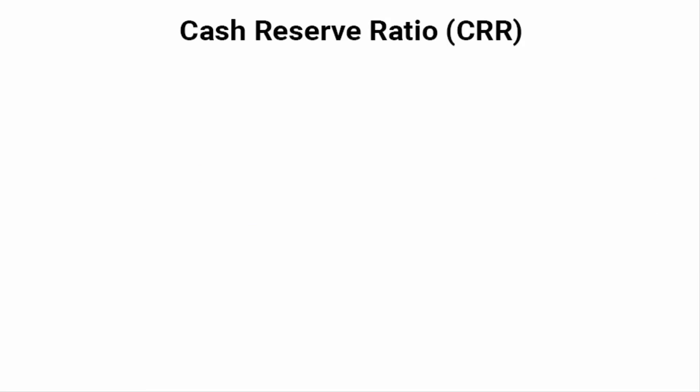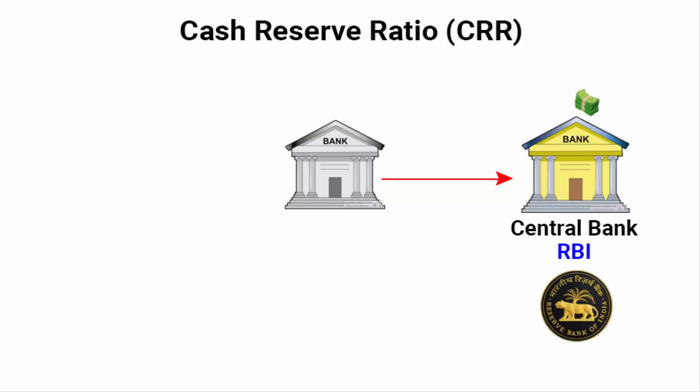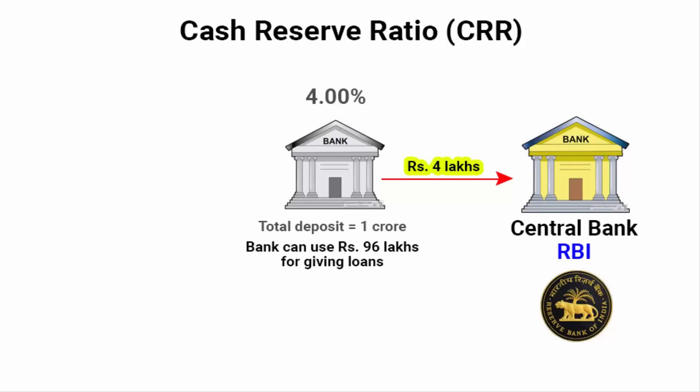Now let's understand what is CRR — Cash Reserve Ratio. Commercial banks have to hold a certain amount of their deposits as reserves with the central bank. For example, suppose your bank's total deposit is 1 crore rupees. If the central bank says all commercial banks have to keep 4% of their total deposit as reserve, that would be Rs. 4 lakhs. Your bank has to keep Rs. 4 lakhs as a reserve with the central bank. This percentage — 4% — is called the cash reserve ratio.